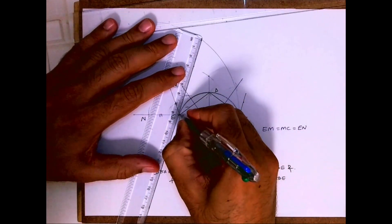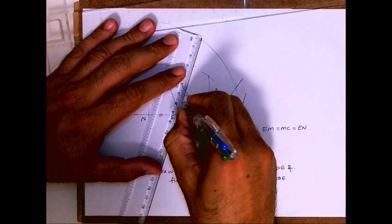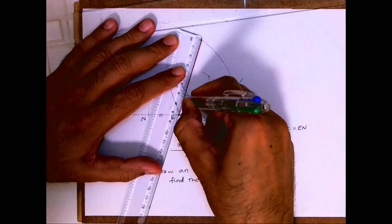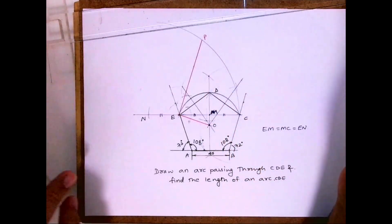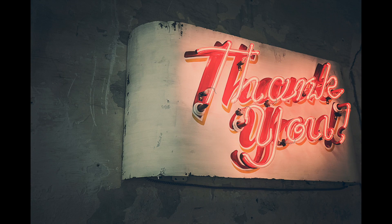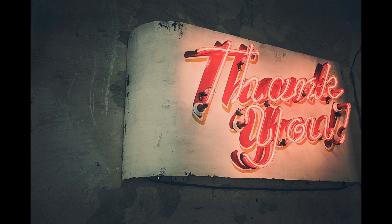And from E you draw perpendicular, so you'll get the arc length. So EP is your arc length. I hope you people have understood this. Thank you.